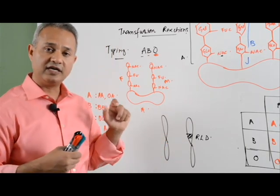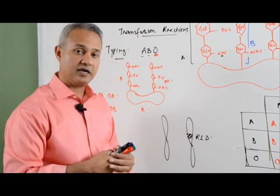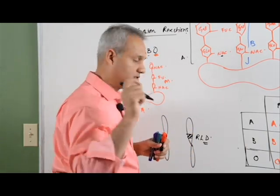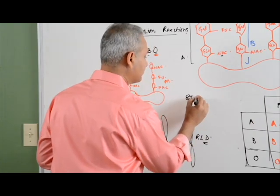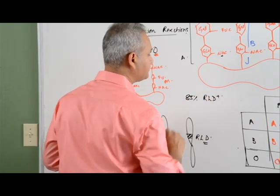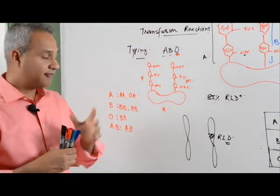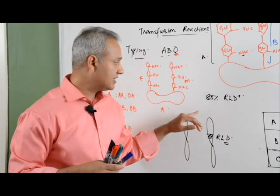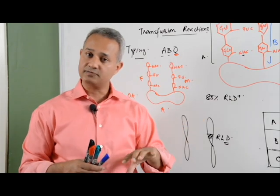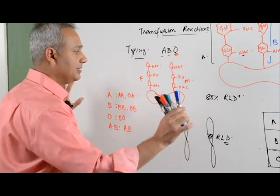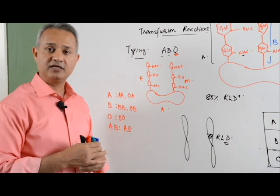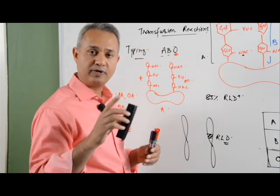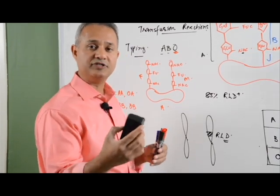85 percent of people are Rhesus D positive, meaning they have the Rhesus D gene expressing Rhesus D molecules. Also remember that 85 percent of people are secretors — they secrete the ABO antigens in their secretions — and 85 percent of people are Rhesus D positive as well. Keep this in mind. Now let us look at blood group typing, and then we will cover how transfusion reactions occur.